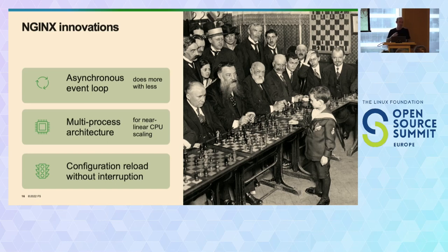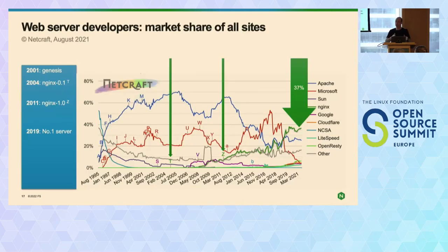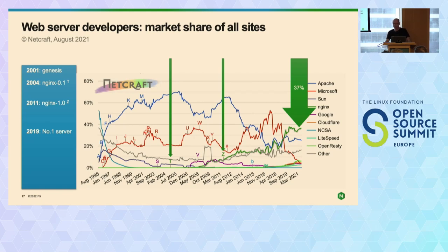The other thing that Nginx had was the ability to change the configuration, keep the old workers handling the existing connections, set up some new workers to handle the new configuration, and then clean it all up without any interruption. This non-destructive configuration reload also made it very easy to run in production without any downtime. In fact, with Nginx, you can do a binary version upgrade without any downtime as well.